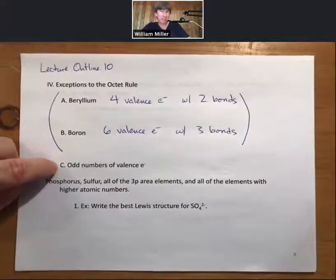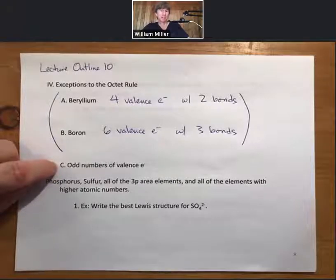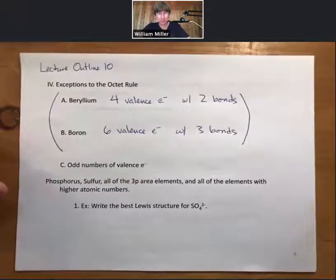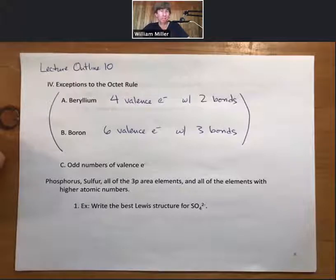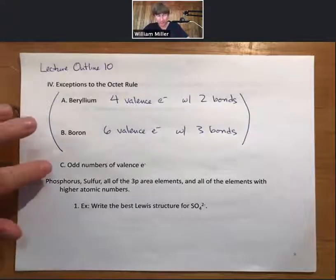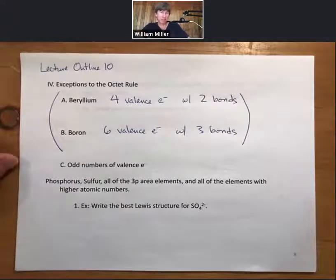The third exception is odd numbers of valence electrons. Everything we've done so far has an even number, and those are the vast majority of cases. If you stumble across something with an odd number, first recount your electrons — usually they're even. In this class, you'll only see odd numbers if the problem explicitly states the species has an odd number of valence electrons. Even with odd numbers, you still cannot go over the octet rule.